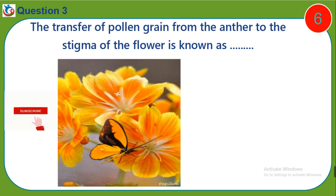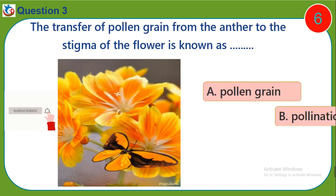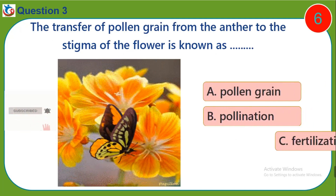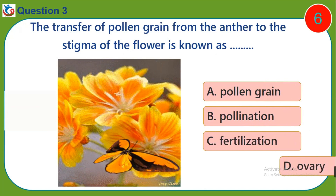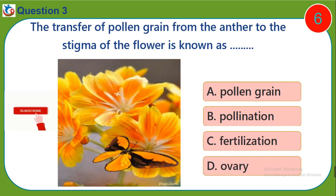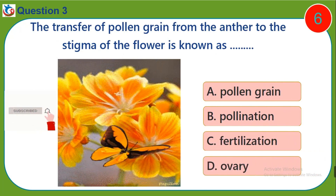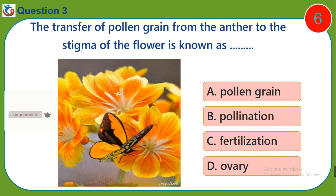Question three: The transfer of pollen grain from the anther to the stigma of the flower is known as — a) pollen grain, b) pollination, c) fertilization, d) ovary.